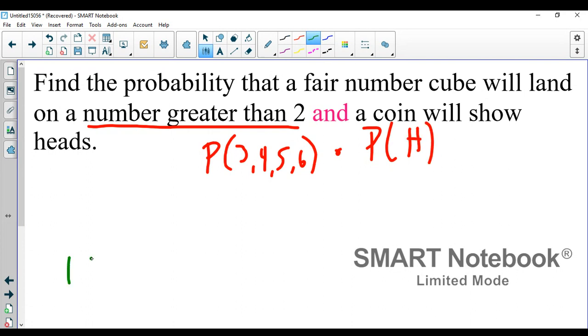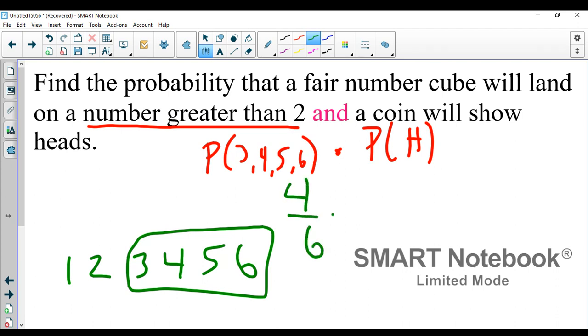The first thing I know when I'm dealing with a dice or number cube, there are six total options. Greater than a two, there are four of them. So there's a four out of six probability that happens, and flipping a heads is one out of two.